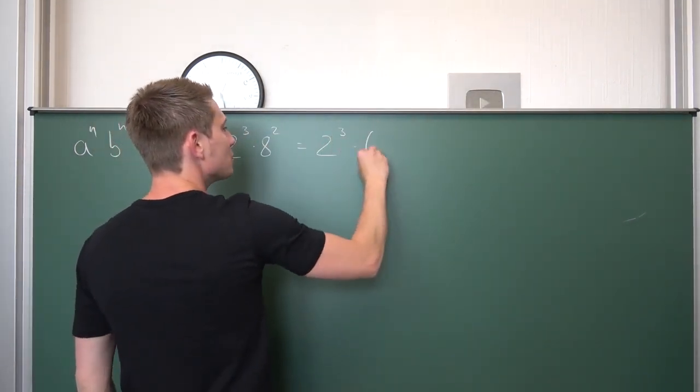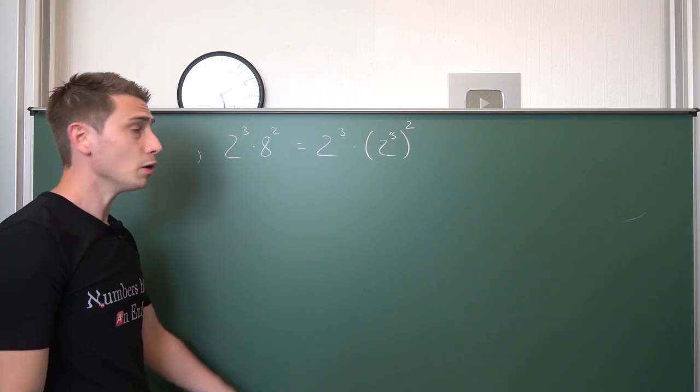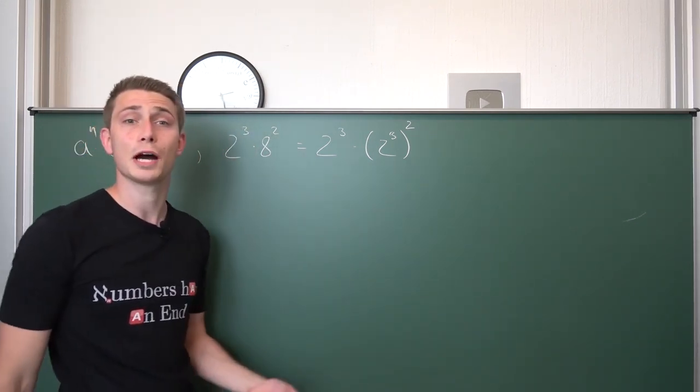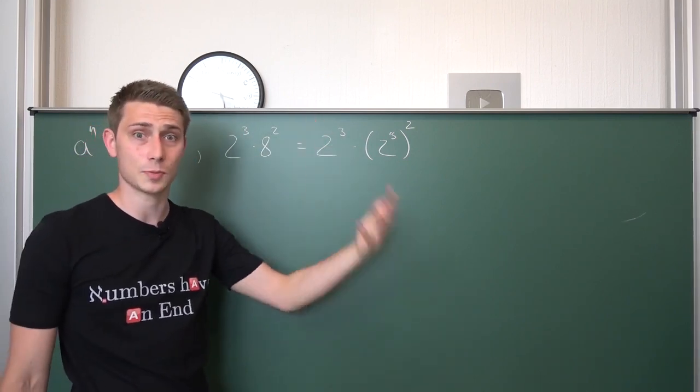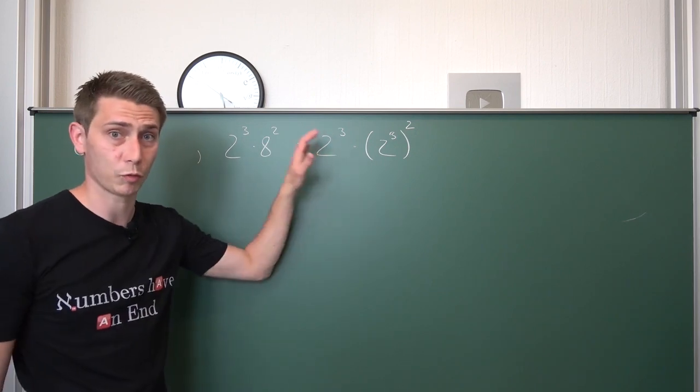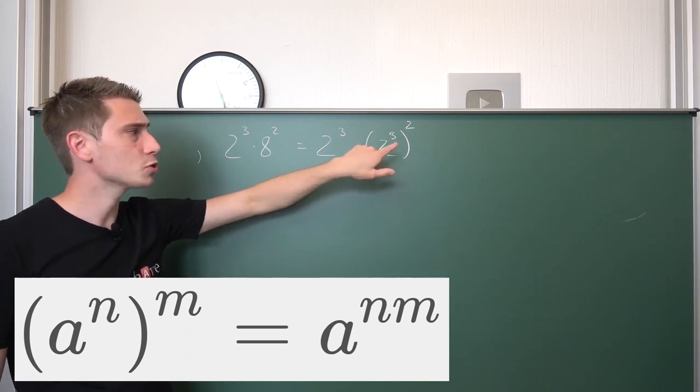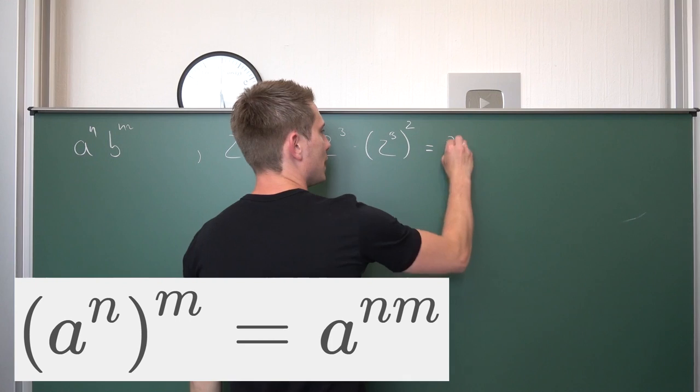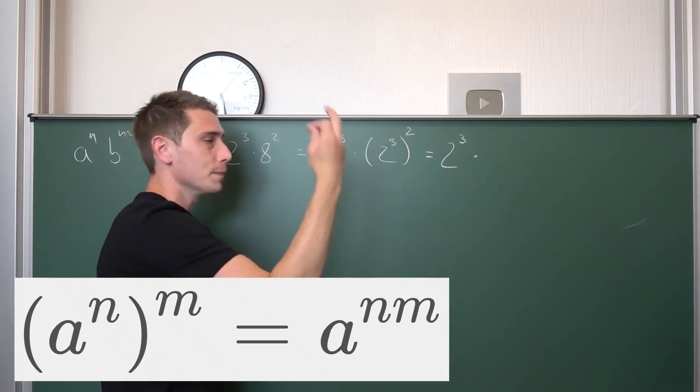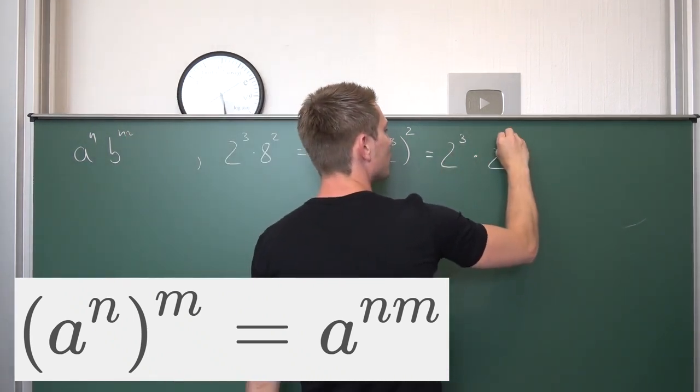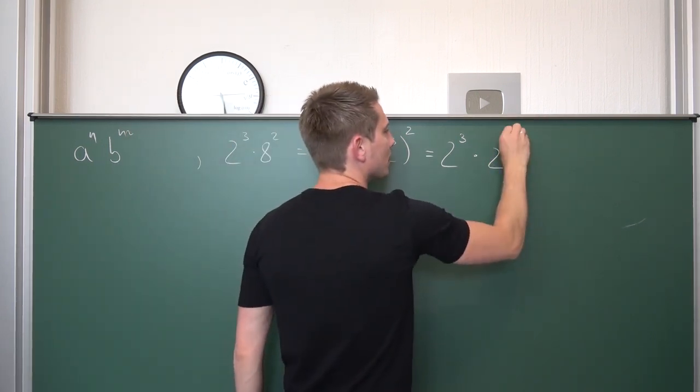So this is 2 to the 3rd power times, and now associativity please, 2 to the 3rd power and then squared. Now, we are going to make use of an exponentiation rule we have derived before. It's important to know these. If you don't know them anymore, take a look into the exponentiation playlist and re-watch it please. It's important for all that we are going to do here now. Now, if we exponentiate an exponential, we are going to multiply the exponents together. Meaning, what we have here is 2 to the 3rd power times 2 to the 3 times 2 power. So this is 2 to the 3 times 2 power. And 3 times 2 is nothing but 6.